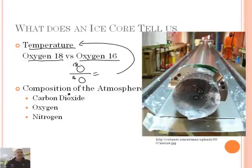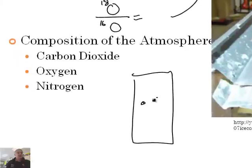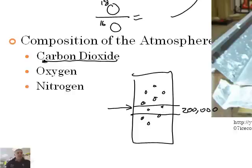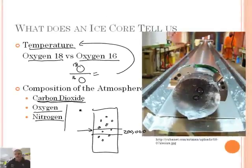The other thing you can figure out is what was in the atmosphere. In this ice core there are trapped gases. If you take a sliver of ice from, say, 200,000 years ago and analyze the thousands of bubbles in it, you can figure out how much carbon dioxide was present, how much is oxygen, how much is nitrogen — how much of everything is in there.